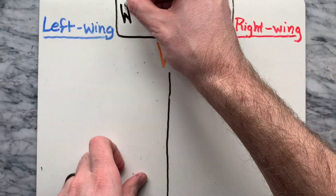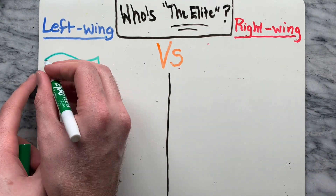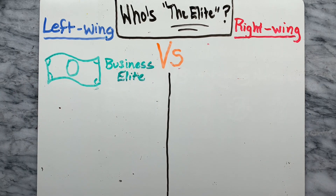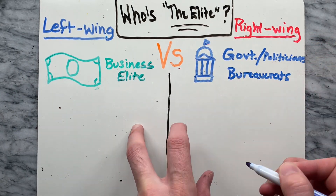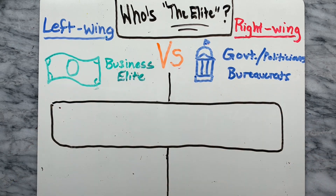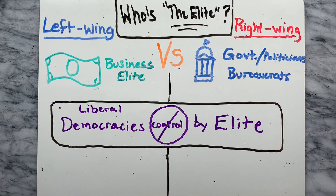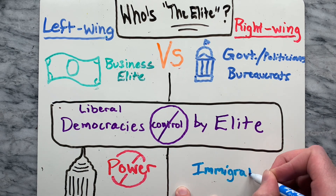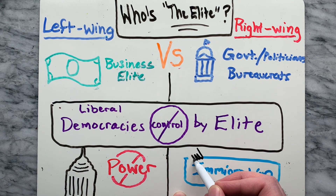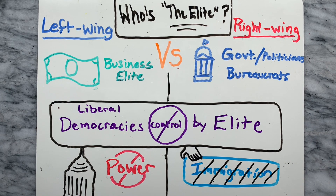Another difference between the left and the right is who they consider the elite to be. For the left, it is more often the business elite, and for the right, the elite usually refers to the government, politicians, and bureaucrats. Both right-wing populism and left-wing populism object to the perceived control of liberal democracies — also referred to as western democracy — by the elites. However, populism of the left also objects to the power of large corporations and their allies, while populism of the right normally supports strong controls on immigration.